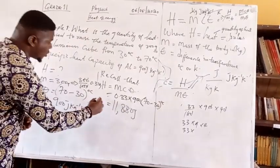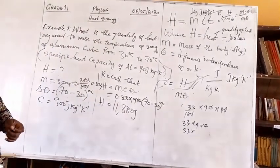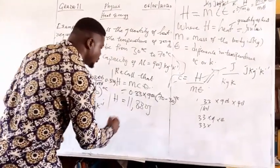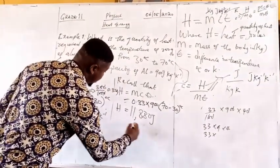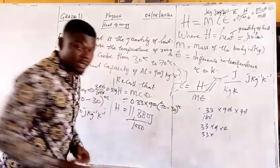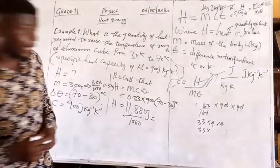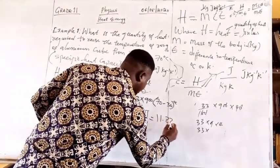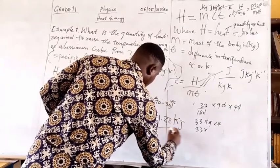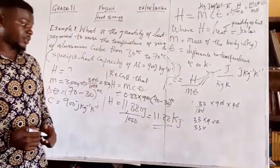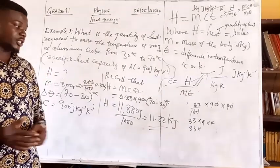There are other units of heat capacity or quantity of heat. I can convert this to kilojoules by dividing by 1000. If I divide by 1000, I have 11.88 kilojoules.